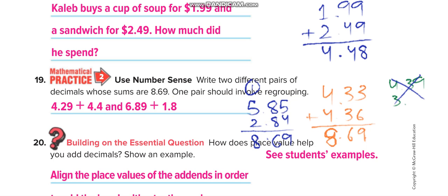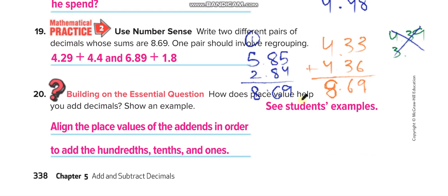How does place value help you add decimals? Of course, you write the place values under each other, so it helps you a lot. Align the place values of the addends in order to add the hundreds, tens, and ones under each other.